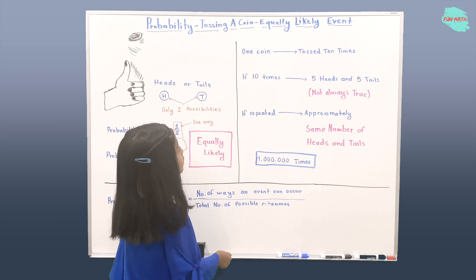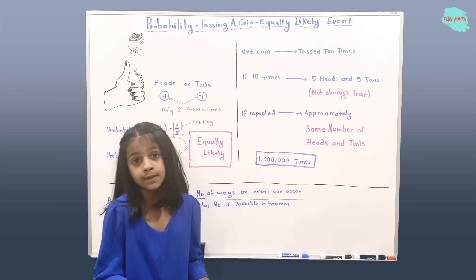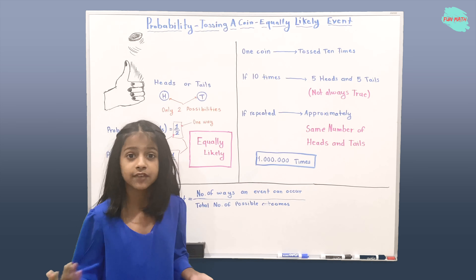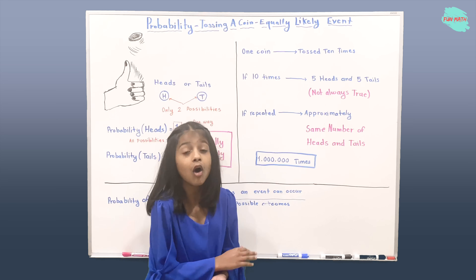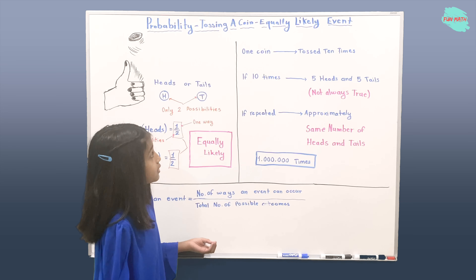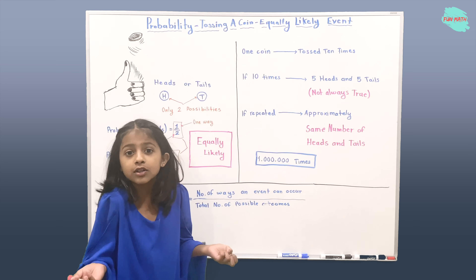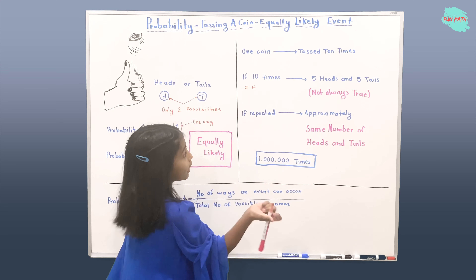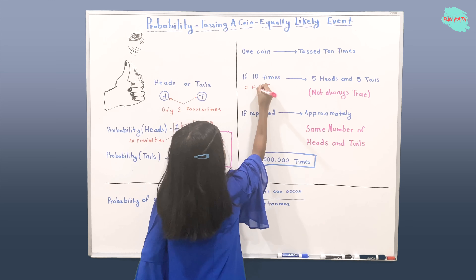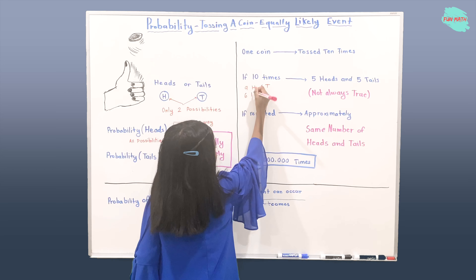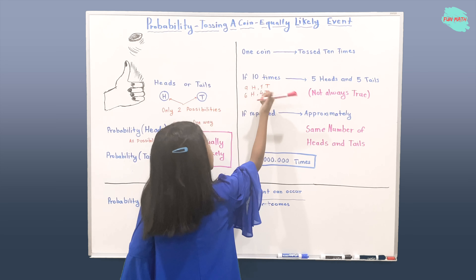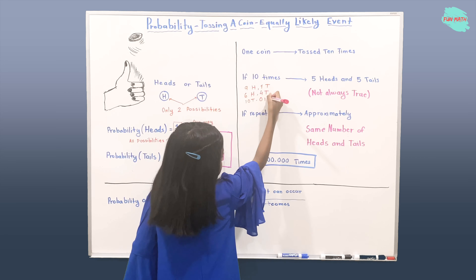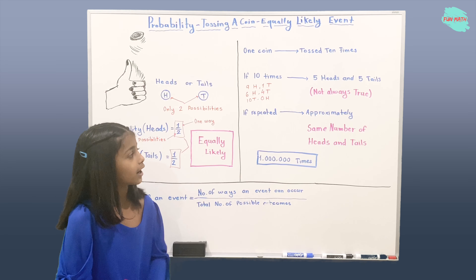So we have one coin and let's say we toss it ten times. What happens if ten times we get five heads and five tails? But that's not always true. There are more ways to get heads and tails. You can say there are nine heads and one tail, or six heads and four tails, or ten tails and zero heads — and there are many other ways.